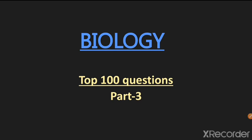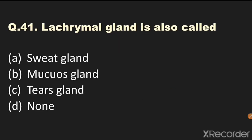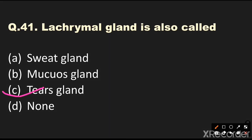Question number 41: Lacrimal gland is also called — options are sweat gland, mucous gland, TS gland, or none. The answer is TS gland. TS glands are located in the eyes.